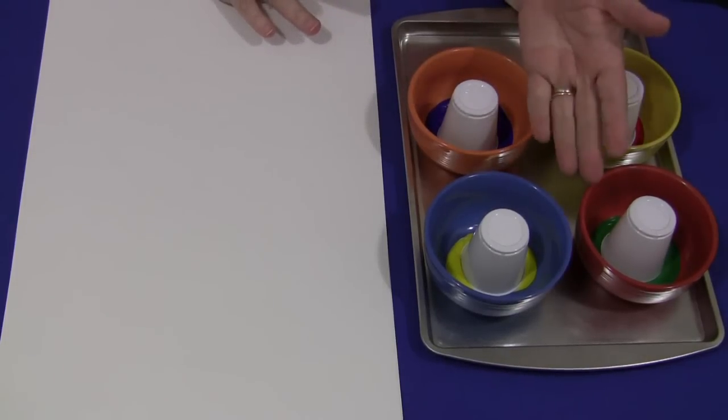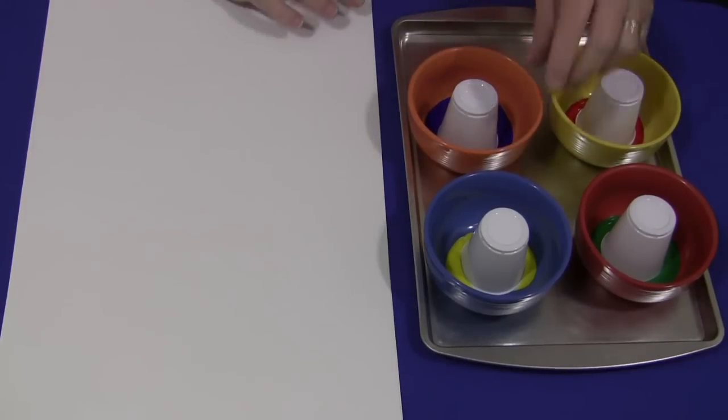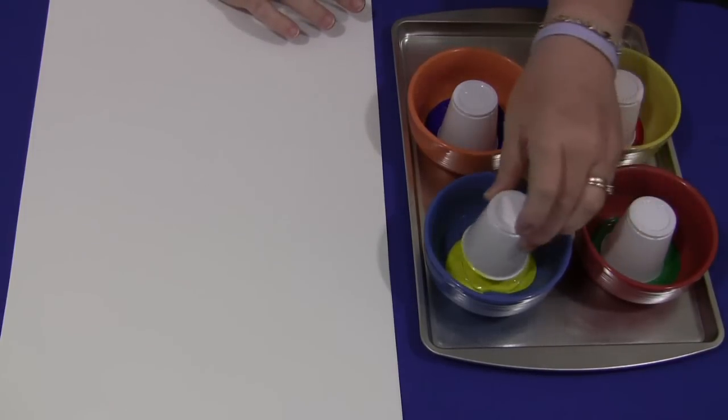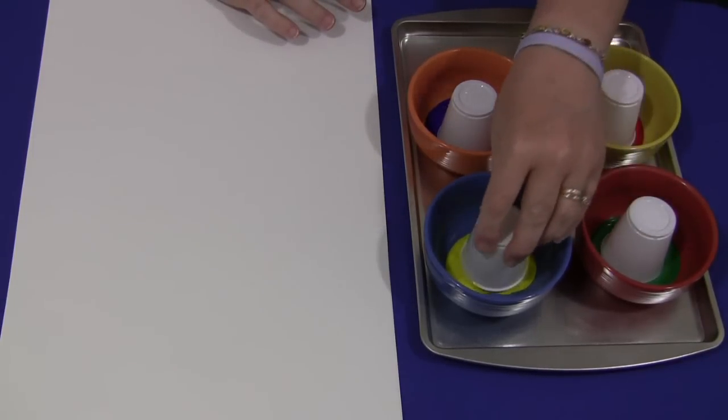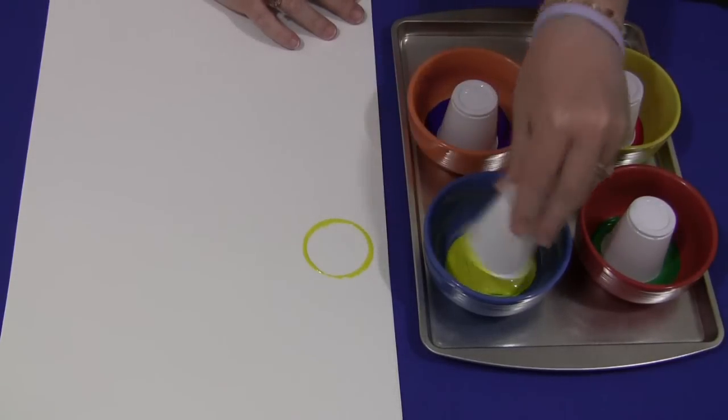You would put tempera paint in a bowl or on a paper plate, one color for each plate or bowl. Then you would put a plastic cup in there and the children would just dip it in and press it down on the paper.